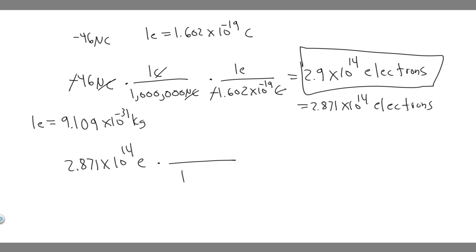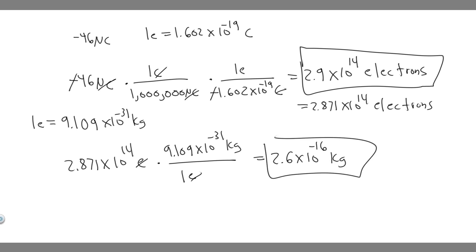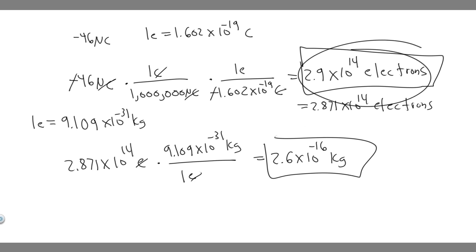We know one electron is equal to 9.109 times 10 to the minus 31 kg. So we multiply 2.871 times 10 to the 14 by 9.109 times 10 to the minus 31, and you get about 2.6 times 10 to the minus 16 kg. That's how many kilograms she gains as a result of a net charge of minus 46 microcoulombs. So those are your two answers — the number of excess electrons and the mass increase.